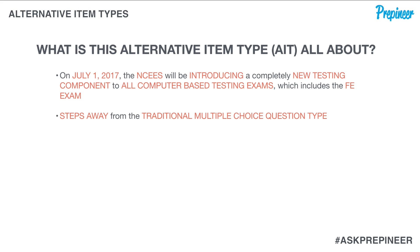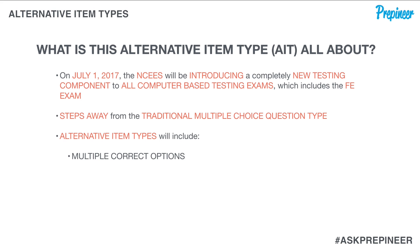The AITs are going to be questions that stray away from the traditional multiple-choice questions that we have seen on the FE exam from the very beginning. These question types are going to include multiple correct options, drag and drop, point and click, as well as fill in the blank — so there are four new question types on their way.